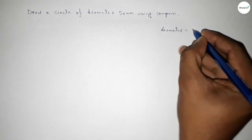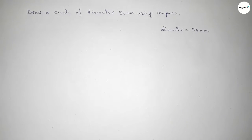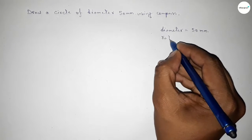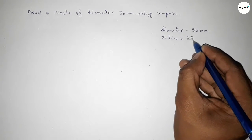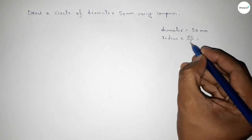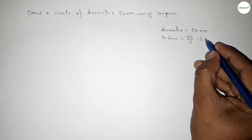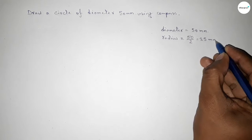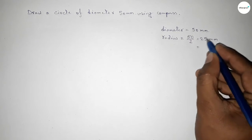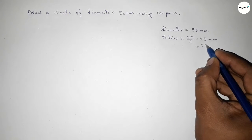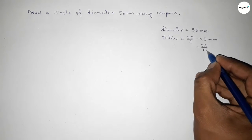Now finding the radius: radius equals diameter divided by 2, so this is 25 millimeters. Next we have to convert millimeters into centimeters, so we divide by 10.